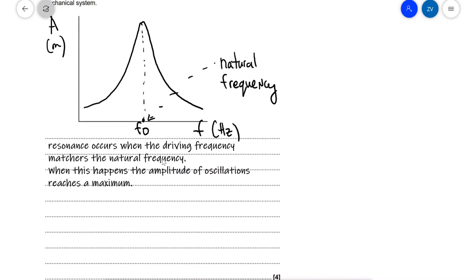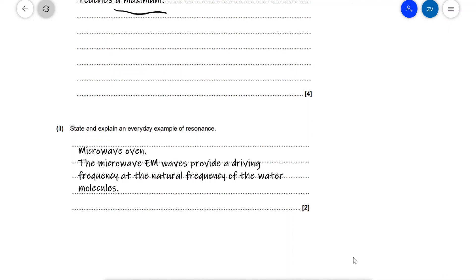So resonance occurs when the driving frequency—that is the frequency of the force that we're applying to that object—matches the natural frequency of that object, and when this happens the amplitude of the oscillations reaches a maximum. We can see there's a maximum here on the graph and we need to make sure that we include that in the answer. The driving frequency is also a keyword that we should definitely have in our answer. Finally, here is an example of resonance: for instance, microwave ovens. In microwave ovens the microwave EM radiation waves provide a driving frequency at the natural frequency of the water molecules and their amplitude increases. Okay folks, so hopefully this makes sense. If there are any questions please feel free to drop a comment and thank you very much for watching.